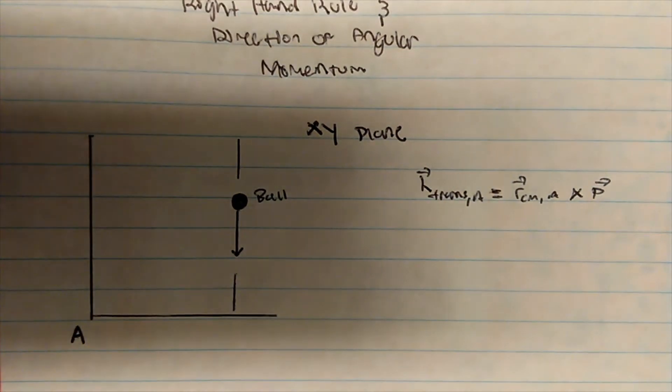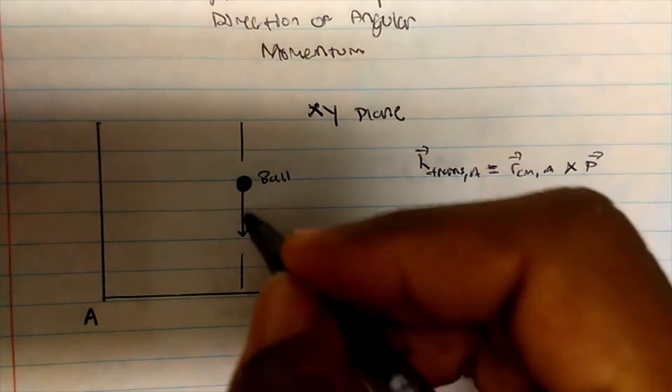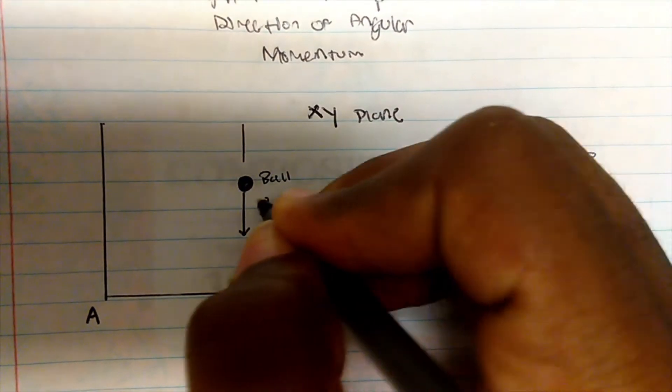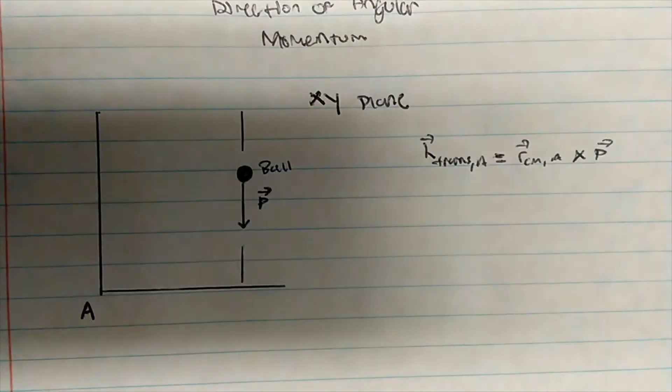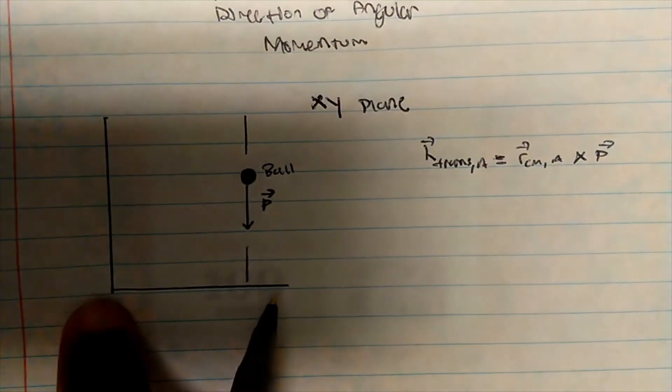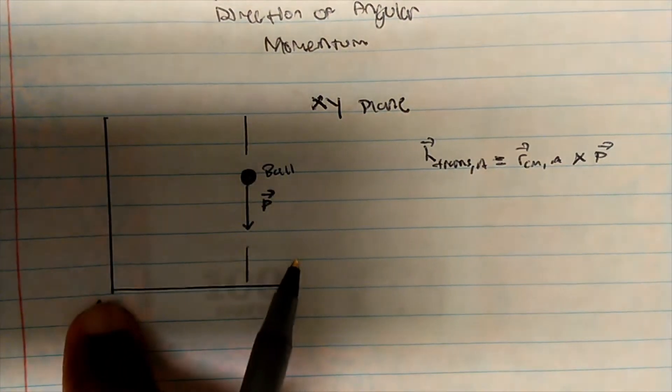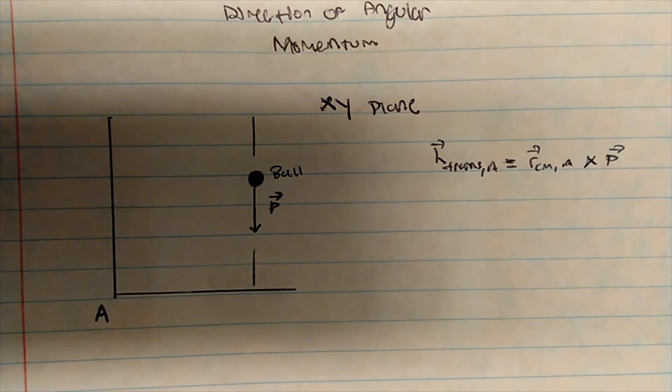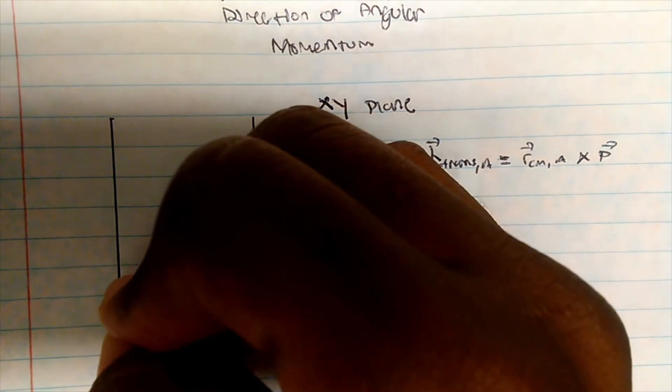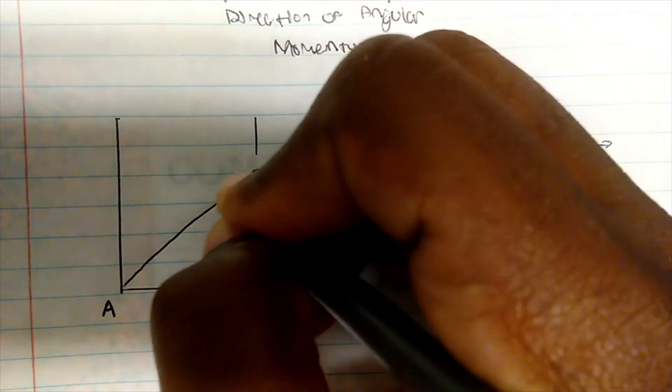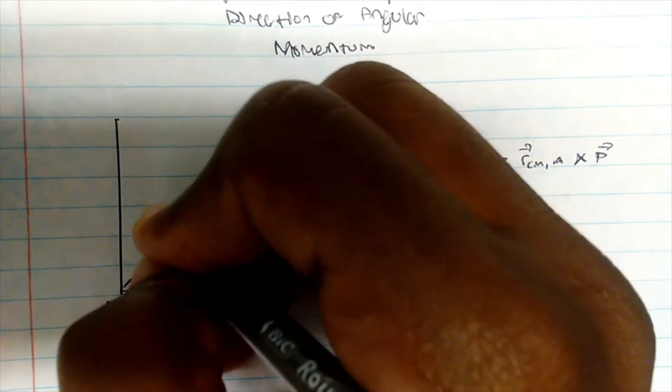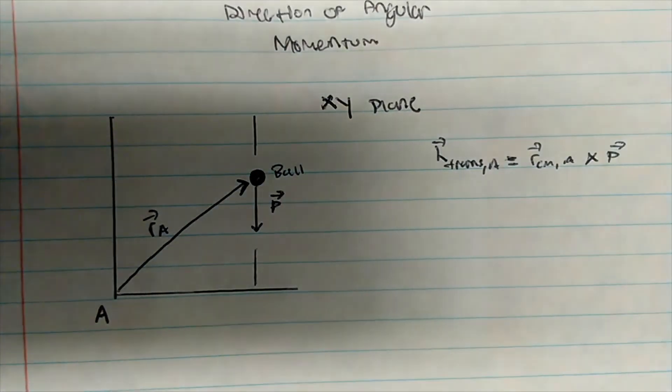So if I'm looking at this, well, here's my momentum. So I know my momentum, it's a vector that's going that way. And here's my R. Here's my A. So what is R with respect to A? Well, I just draw a line simply from A to my point. So there's the vector of RA.